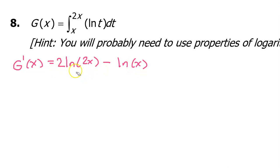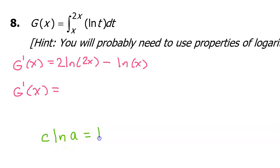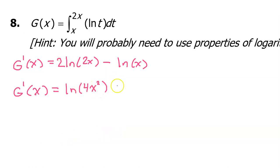However, we need to use the properties of logarithms to simplify this further. The first rule: if we have a constant times a logarithm, we can take that constant and put it as the exponent. So c times the natural log of a equals the natural log of a to the c power. Applying this to the first term, we move the 2 to become the exponent, giving us the natural log of (2x) squared, which we can write as the natural log of 4x squared. Then we bring down minus the natural log of x.